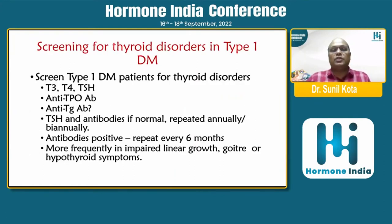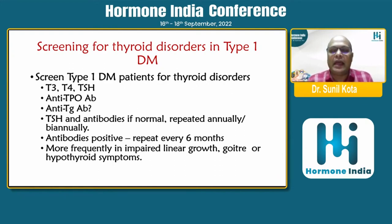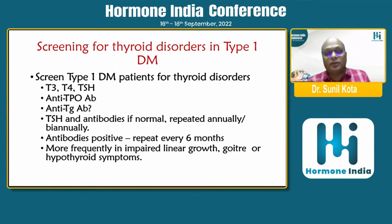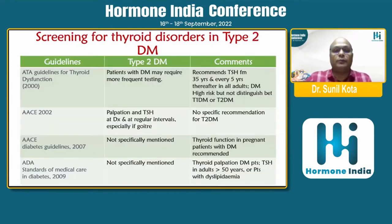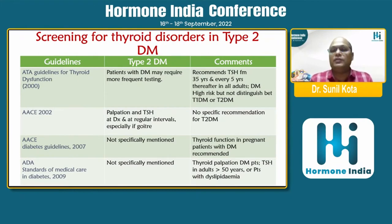The practical recommendations: screen type 1 diabetic patients for thyroid disorders with T3, T4, TSH, and anti-TPO antibody; anti-TG antibody is optional. If TSH and antibodies are normal, repeat annually or biannually. If the antibody is positive with normal TSH, repeat every six months. Testing frequency can increase if there is impairment of linear growth, goiter, or onset of hypothyroid symptoms. For type 2 diabetes, there is no definitive recommendation, but an older guideline from 2000 states to do TSH from 35 years onwards, once every five years in all adults.